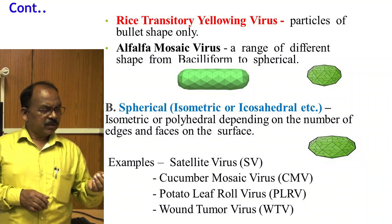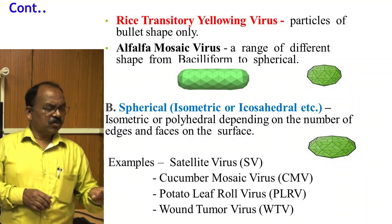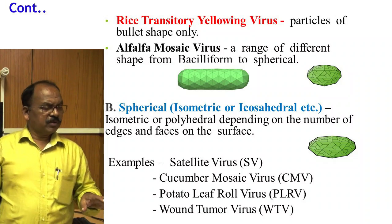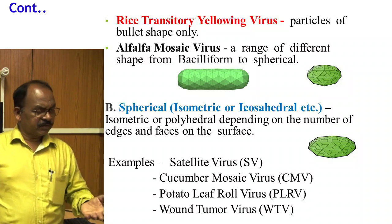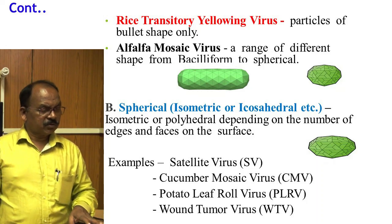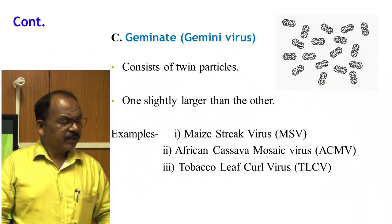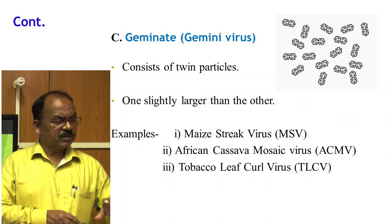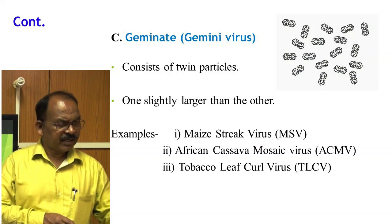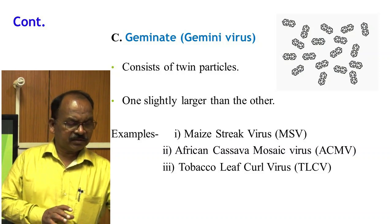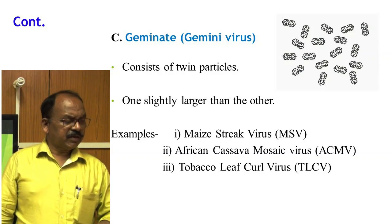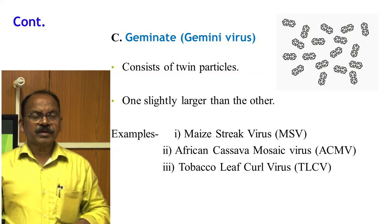The second type of plant virus shape is spherical, isometric, or icosahedral — isometric or polyhedral depending on the number of edges and faces on the surface. Examples include satellite viruses, Cucumber Mosaic Virus, Potato Leaf Roll Virus, Wound Tumour Virus, and Geminate Virus (also called Gemini Virus), which consists of twin particles where one is slightly larger than the other. Examples of Gemini viruses are Maize Streak Virus, African Cassava Mosaic Virus, and Tobacco Leaf Curl Virus.